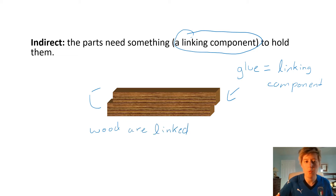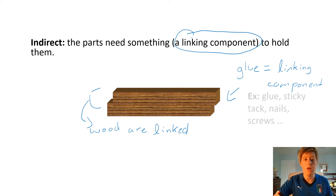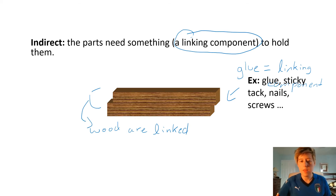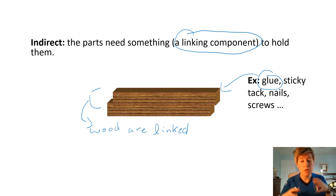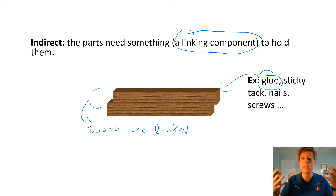There are a multitude of examples of linking components: things like glue, sticky tack, nails, screws — all of those things can act as linking components. So to summarize: direct means no linking component is needed; indirect means I need something to bridge the gap between the two materials to put them together.